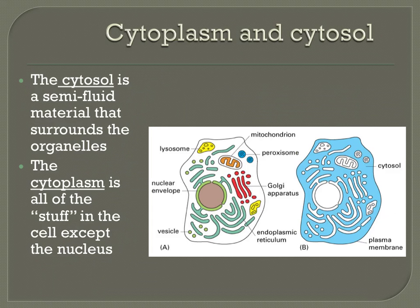Now that we've finished talking about organelles, we'll cover two final vocabulary terms: cytoplasm and cytosol. Both begin with the prefix cyto, which means cell. The cytosol is the semi-fluid substance that surrounds all of the other cell parts within the cell membrane — just like matrix surrounds structures in the mitochondria and stroma surrounds structures in chloroplasts. The cytoplasm, on the other hand, includes all of the liquid stuff that surrounds cells — the cytosol plus all of the organelles found in the cell, except for the nucleus.